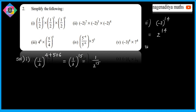Third problem: 4^4 multiplied by (5/4)^4. Applying the law (a/b)^m = a^m/b^m, this becomes 4^4 × 5^4/4^4. The 4^4 in the numerator and denominator cancel, leaving 5^4.